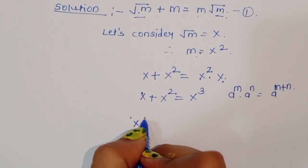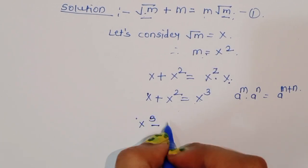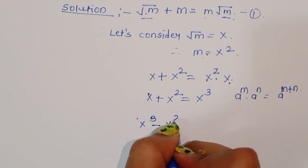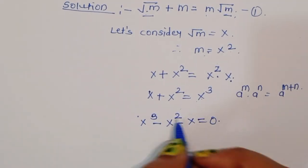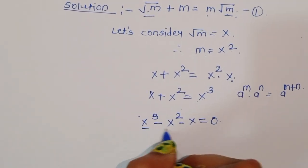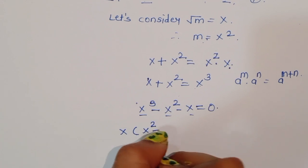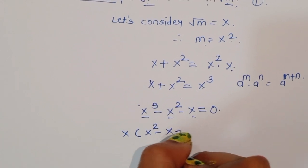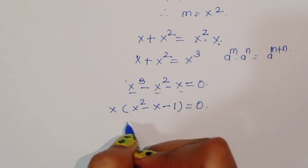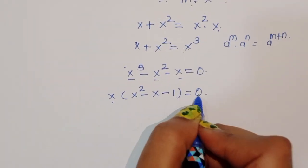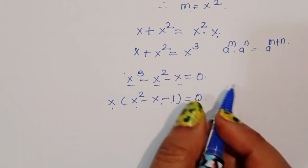We can rearrange this to x cubed minus x squared minus x is equal to 0. Taking x as a common factor, we get x times (x squared minus x minus 1) equals 0. This gives us two solutions: x is equal to 0, and x squared minus x minus 1 is equal to 0.